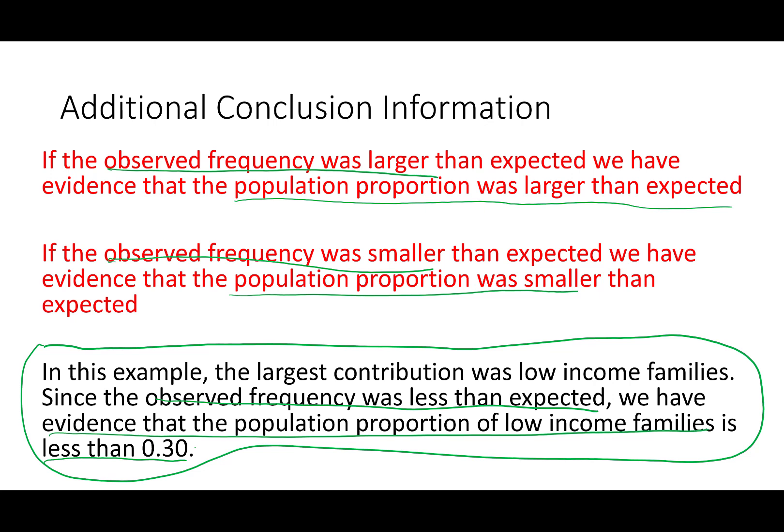And this is all I expect from you in terms of the chi-squared conclusion. Yes, you can sometimes go into your test statistic and find the second largest contributor, but we're not going to worry about that right now. All I want you to do is find the largest contributor — that would be one of our proportions that we at least have evidence differs.